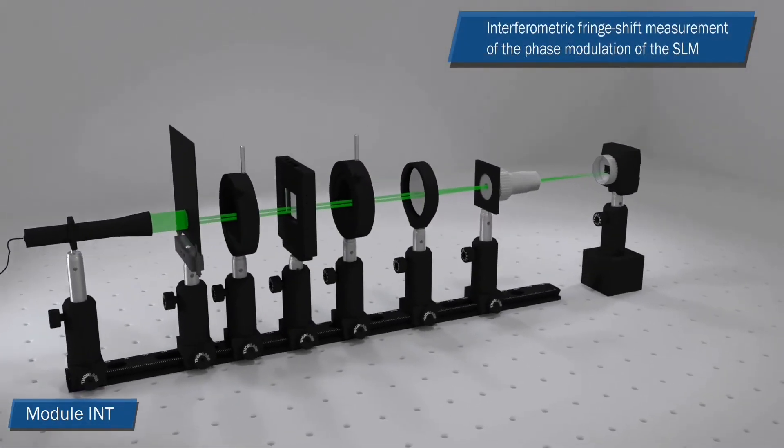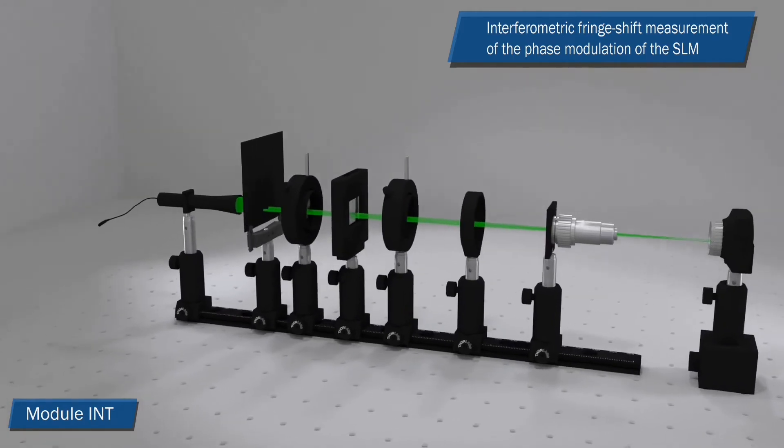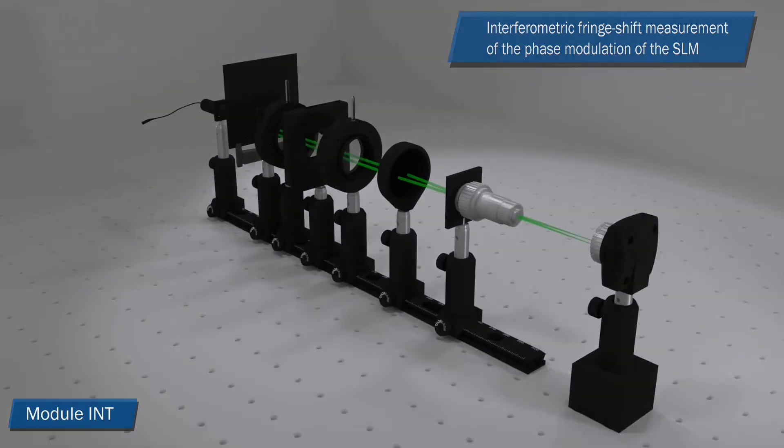The INT module deals with interferometric fringe shift measurement of phase modulation of the Spatial Light Modulator.